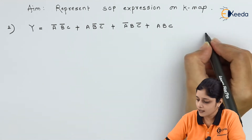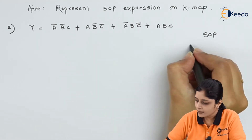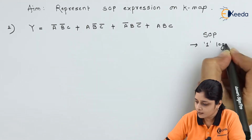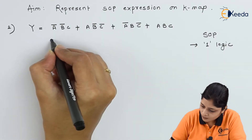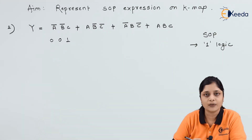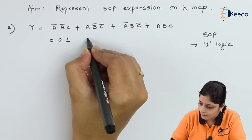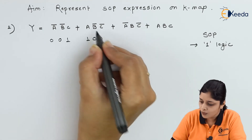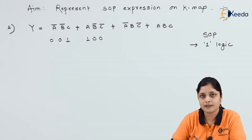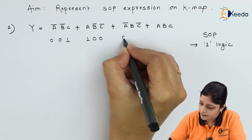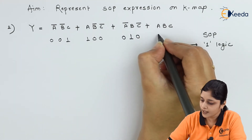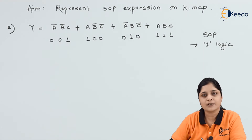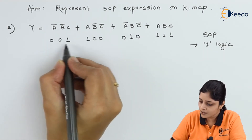The next step: the given expression is SOP, so minterms are represented by logic 1. Find the corresponding minterms for the given expression. For ā write 0, B̄ write 0, C write 1. Then a means 1, B̄ is 0, C̄ is 0. Then ā means 0, B is 1, C̄ is 0. After that a·B·C means 1, 1, 1.